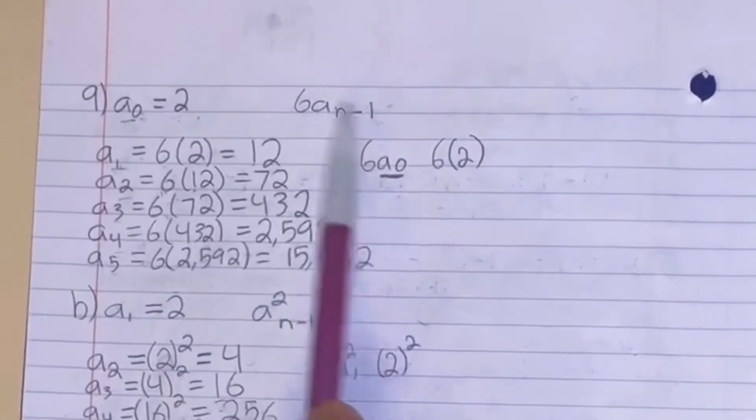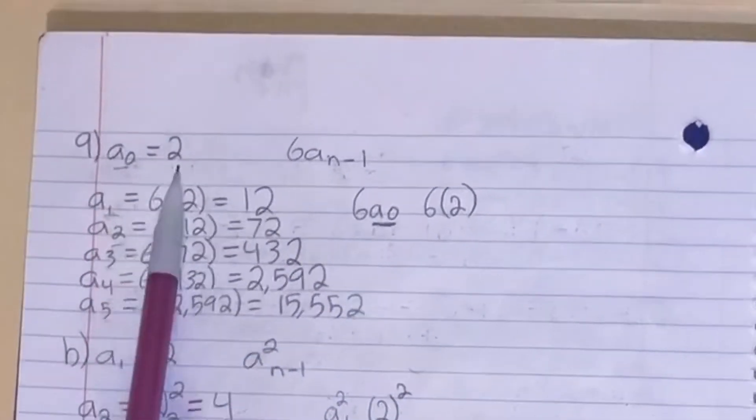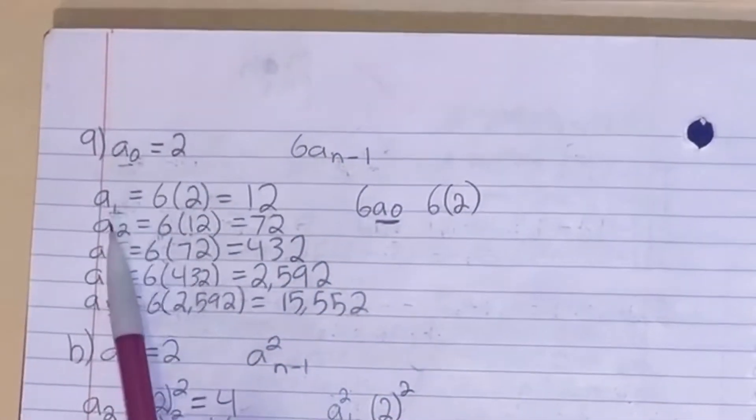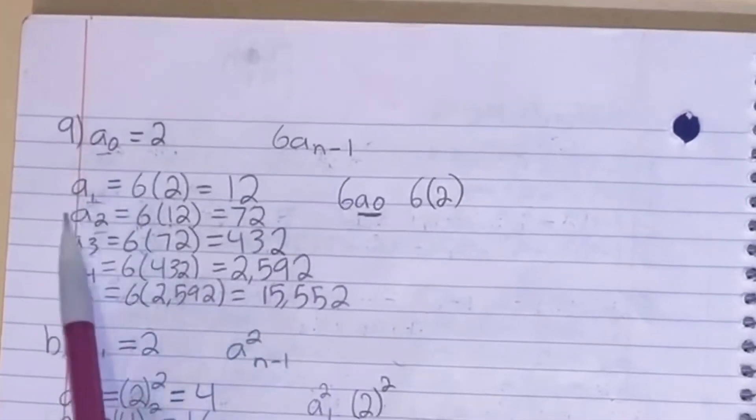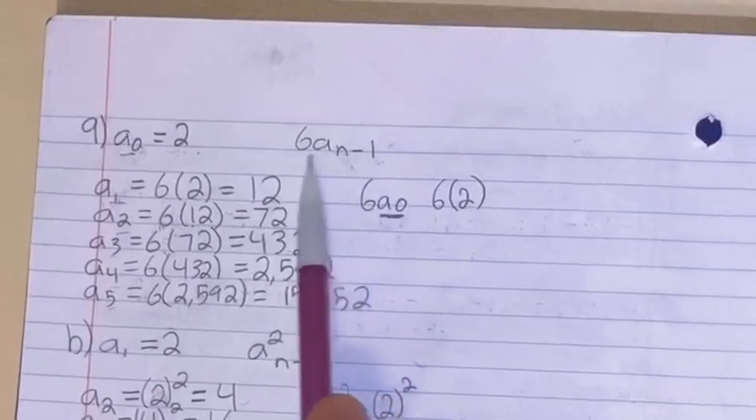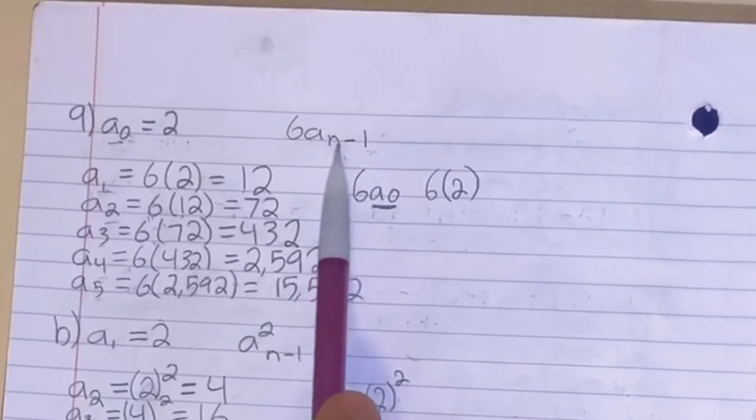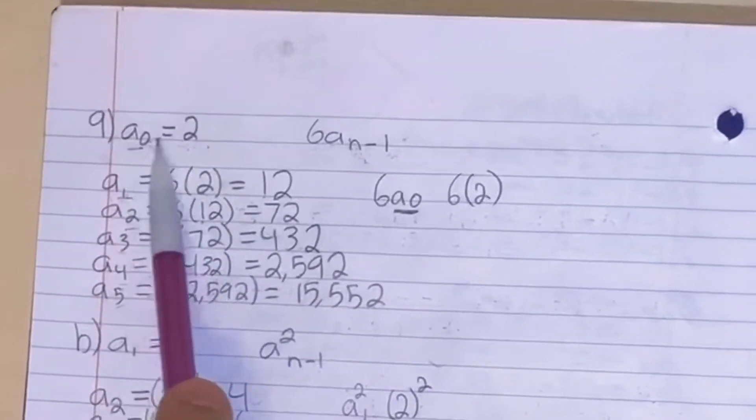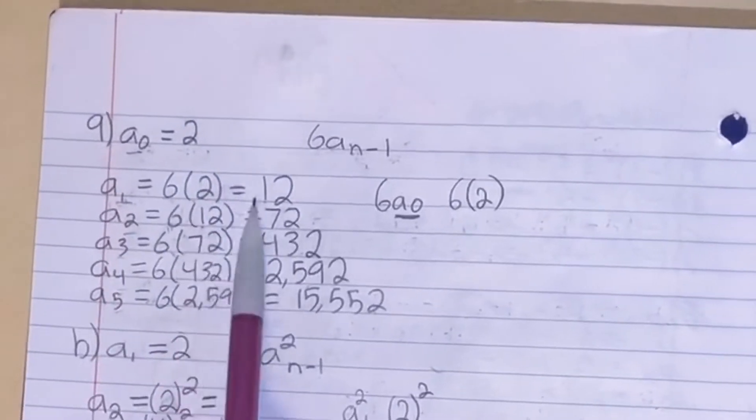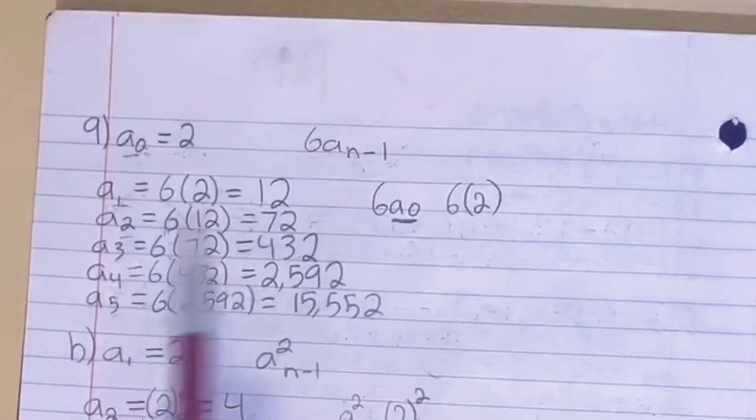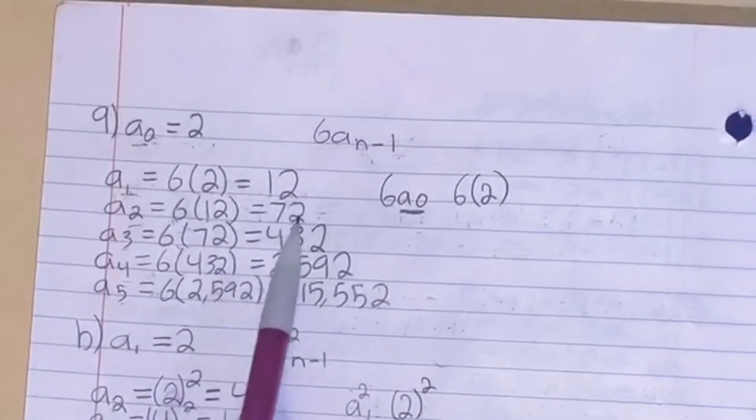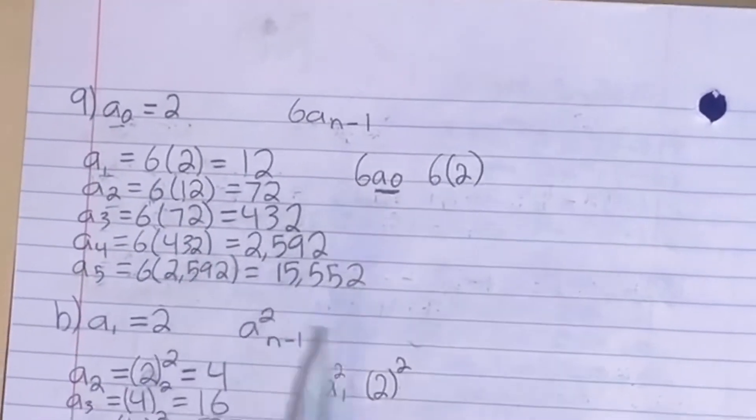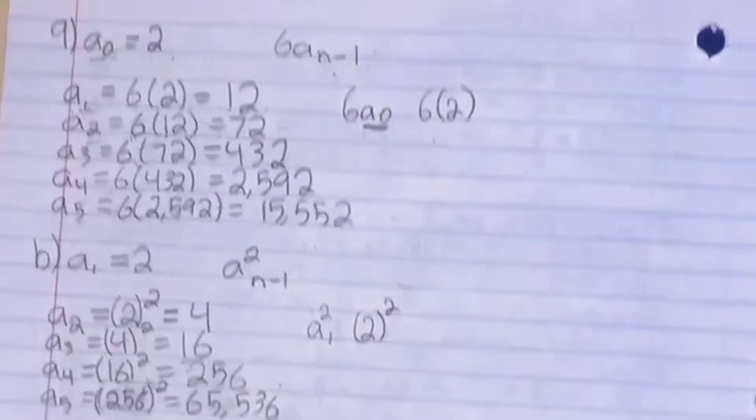What we basically have here is an equation with functions that have values to them, and you just plug whatever this number is into the equation. So we have a to the 1, so a1 minus 1 is 0, so a0 has a value of 2, so 6 times 2 is 12. And you just keep going: 2 minus 1 is 1, a1 has a value of 12, 6 times 12 is 72, and you just keep going with that. That's what we basically do for most of these problems.